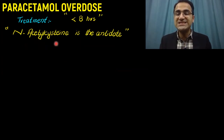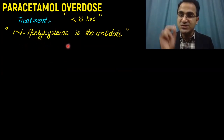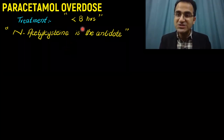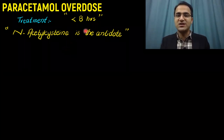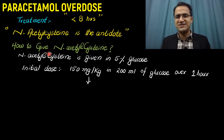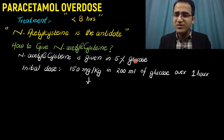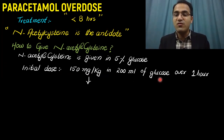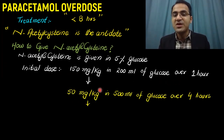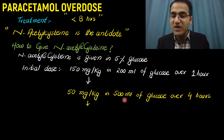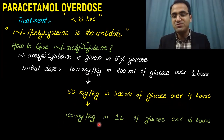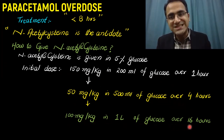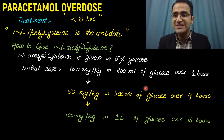In the treatment of paracetamol overdose, N-acetylcysteine is given. It is the specific antidote for paracetamol poisoning and must be given within eight hours of ingestion. N-acetylcysteine is given in 5% dextrose: initial dose of 150 mg per kg in 200 ml of glucose over one hour, then 50 mg per kg in 500 ml of glucose over the next four hours, then 100 mg per kg in one liter of glucose over 16 hours.